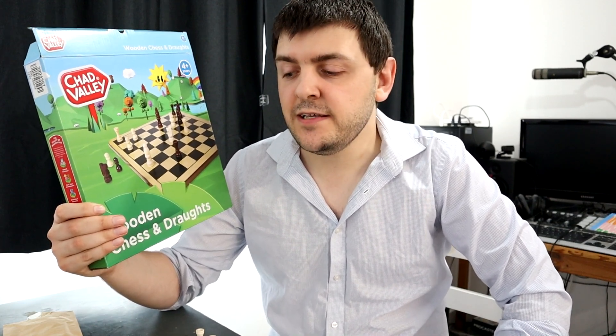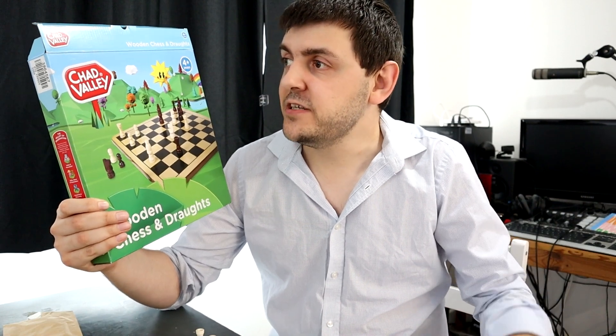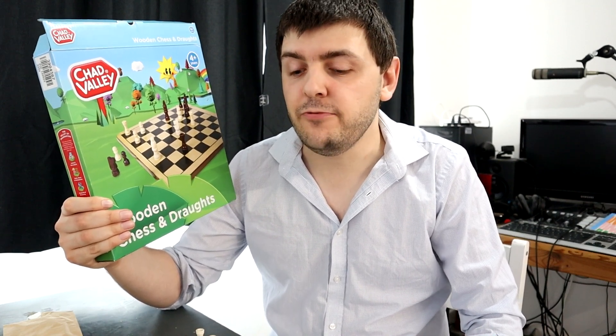That was my unboxing video for this wooden chess and draughts set from Chad Valley. I really like this set. It's a good size. The wooden pieces are really nice, the right size, nicely varnished, and really nice to play with. The only criticism I would have is that there are no instructions. However, to counter that, this is probably one of those things where these are such well-known games that you almost don't need it.